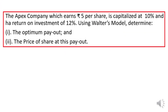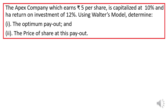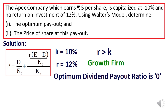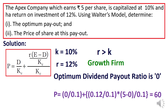We will take up one more question. A company earns EPS of 5 rupees, capitalization rate KE = 10%, and R = 12%. Using Walter's model, determine the optimum payout and the price of the share at this payout. Since R is greater than K (12% > 10%), it is a growth firm. The optimum payout ratio is 0%. Applying the formula with D = 0, K = 0.1, R = 0.12, and E = 5, the value of the firm — the share price — is 60 rupees.